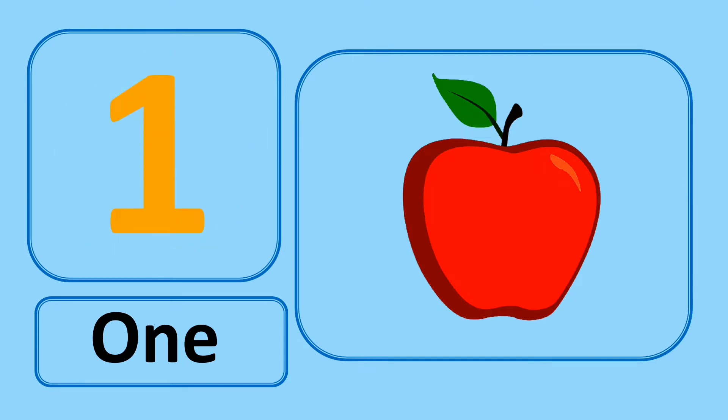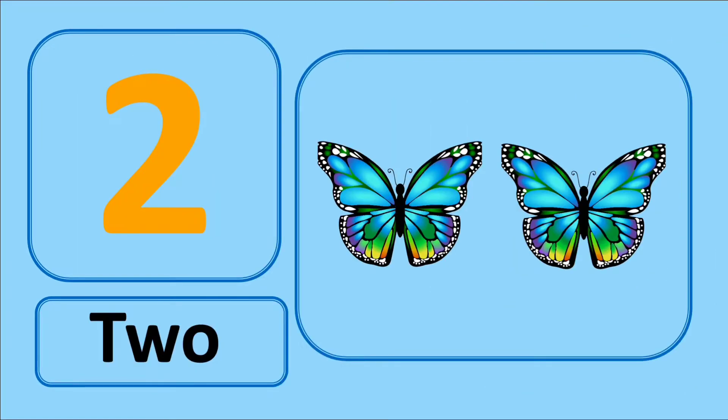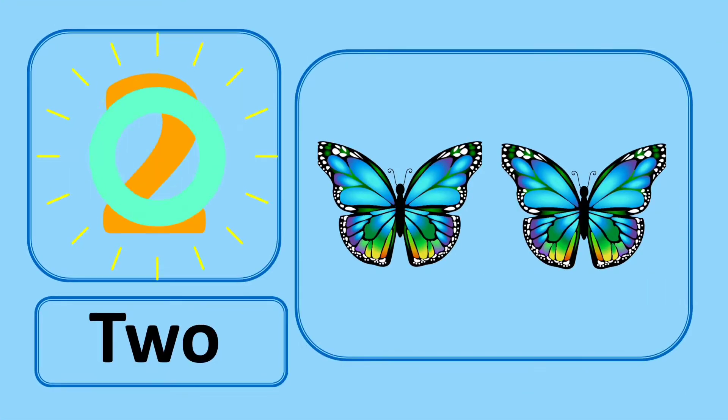1. O-N-E 1. 1 apple. 2. T-W-O 2. 2 butterflies.